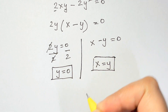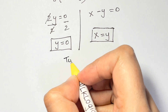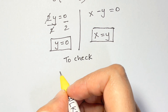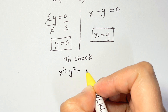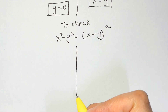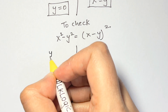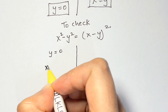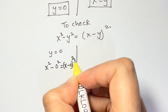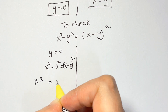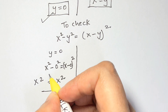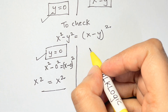Let's check if the answers are right. Our equation is x² minus y² equals (x minus y)². For the first solution y = 0: x² minus 0² equals (x minus 0)², which gives x² equals x². That's correct, so y = 0 is valid.